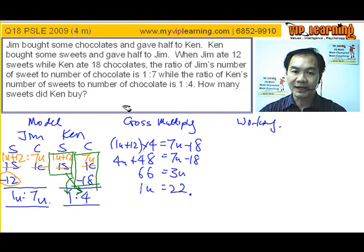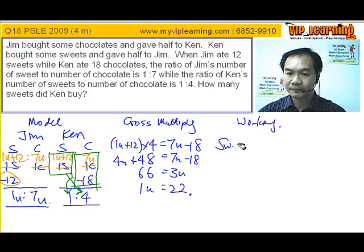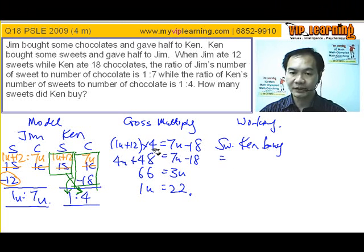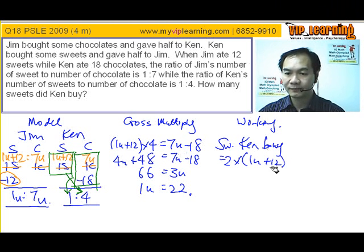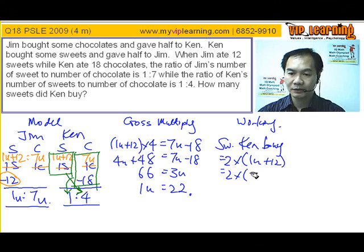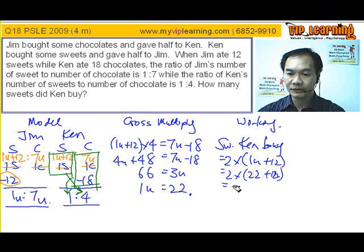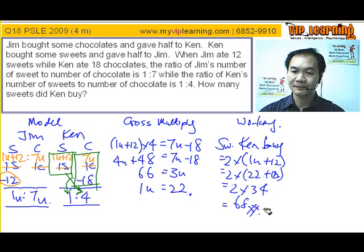The question asks: how many sweets did Ken buy? Sweets bought is actually one portion for himself and the other portion for his friend — so it's 2 portions. That's 2 times (1u + 12). Since 1 unit is 22, it becomes 2 times 34, giving you 68 sweets. And that is your beautiful answer.